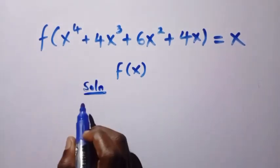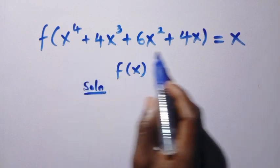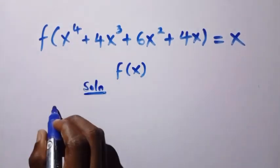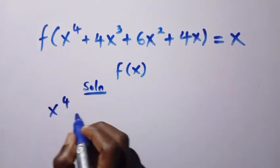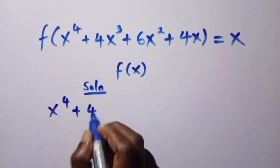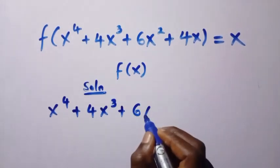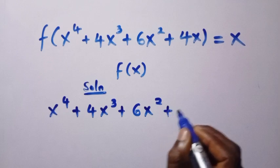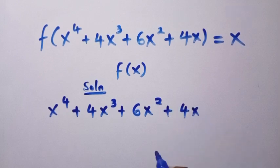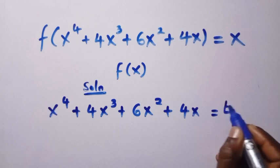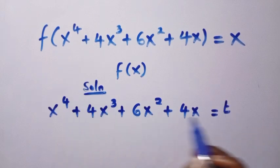The domain of this function is x^4 + 4x^3 + 6x^2 + 4x. If I let the whole of this equal t, I'm representing everything with t.